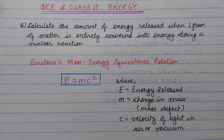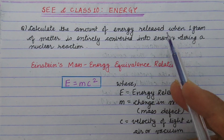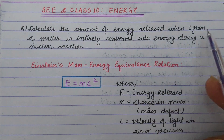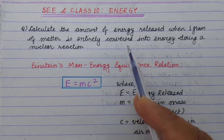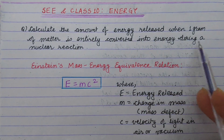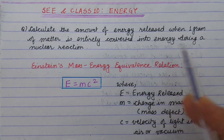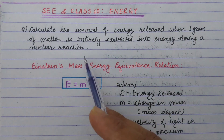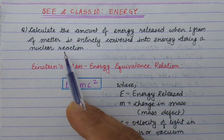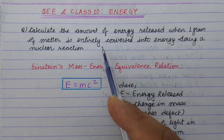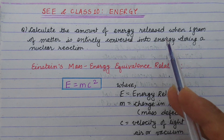Question: Calculate the amount of energy released when one gram of matter is entirely converted into energy during a nuclear reaction. In the nuclear reaction, one gram of matter is entirely converted into energy.